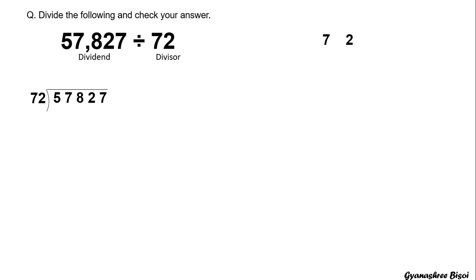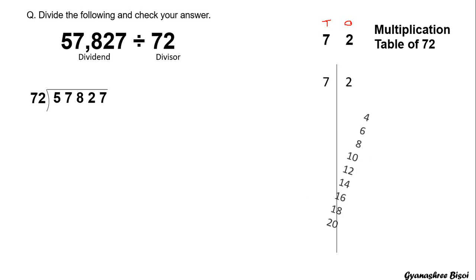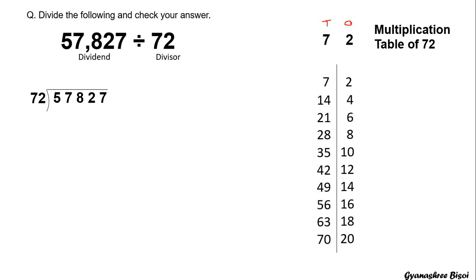We will follow a trick by which we can write the multiplication table of any two-digit number. 72 means 2 is at the 1's place and 7 is at the 10's place. So before writing the multiplication table of 72, we will write the table of 2 and 7 separately.